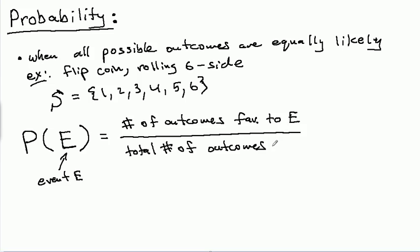Over the total number of outcomes, or number of outcomes in S, right? Okay, so I'm just trying to put this in words. It should be very intuitive. Okay. So number of outcomes favorable to E, total number of outcomes in the sample space.